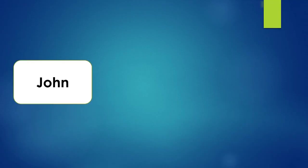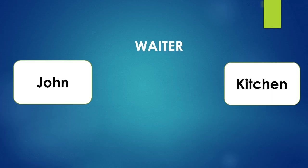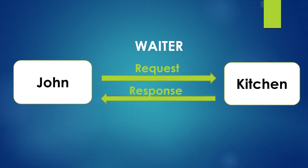Let's assume that there is a person John who wants to have some good food in a restaurant. John went to a restaurant where the food is being prepared in the kitchen. John doesn't have direct access to the kitchen — there is one person in between, that is the waiter, which is used for communication between John and the kitchen. The waiter will take the food request from John, send it to the kitchen, the food will be prepared, and the waiter will send the food response from the kitchen back to John.